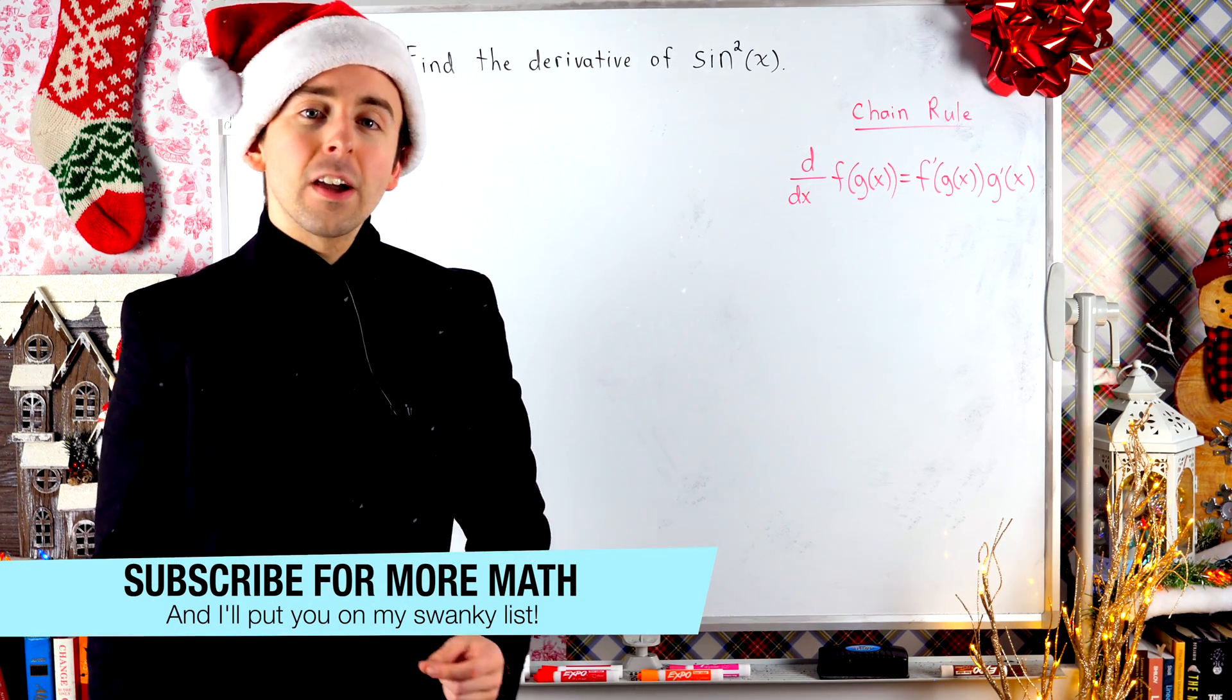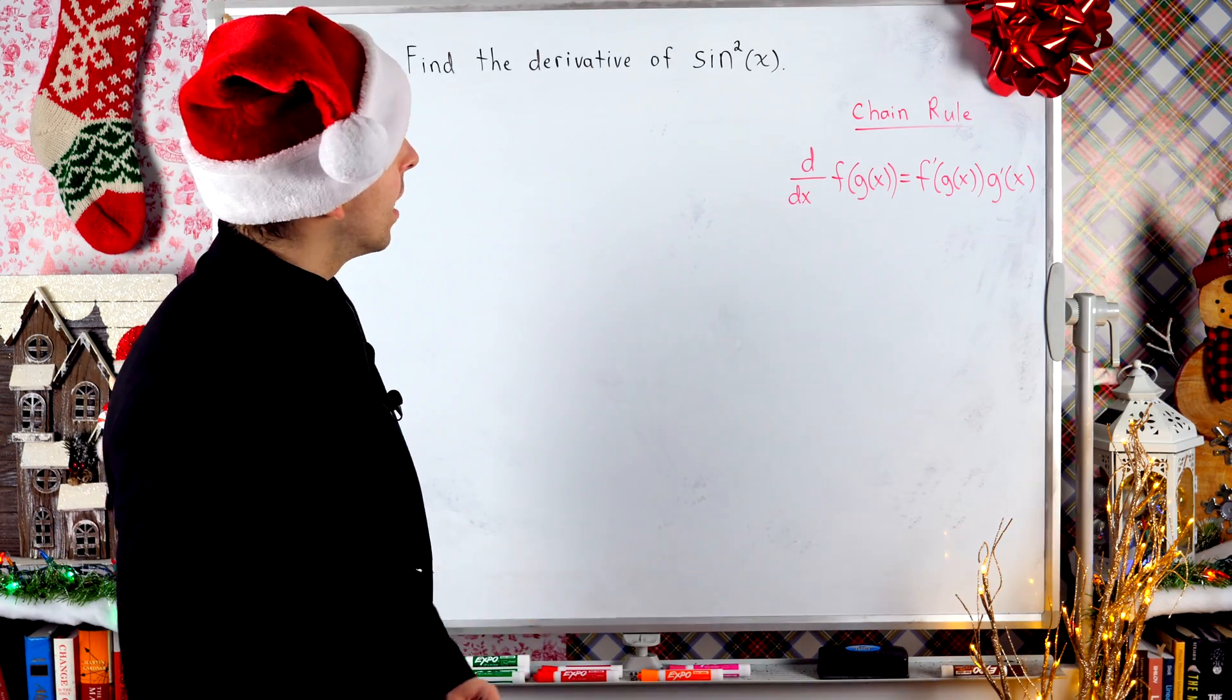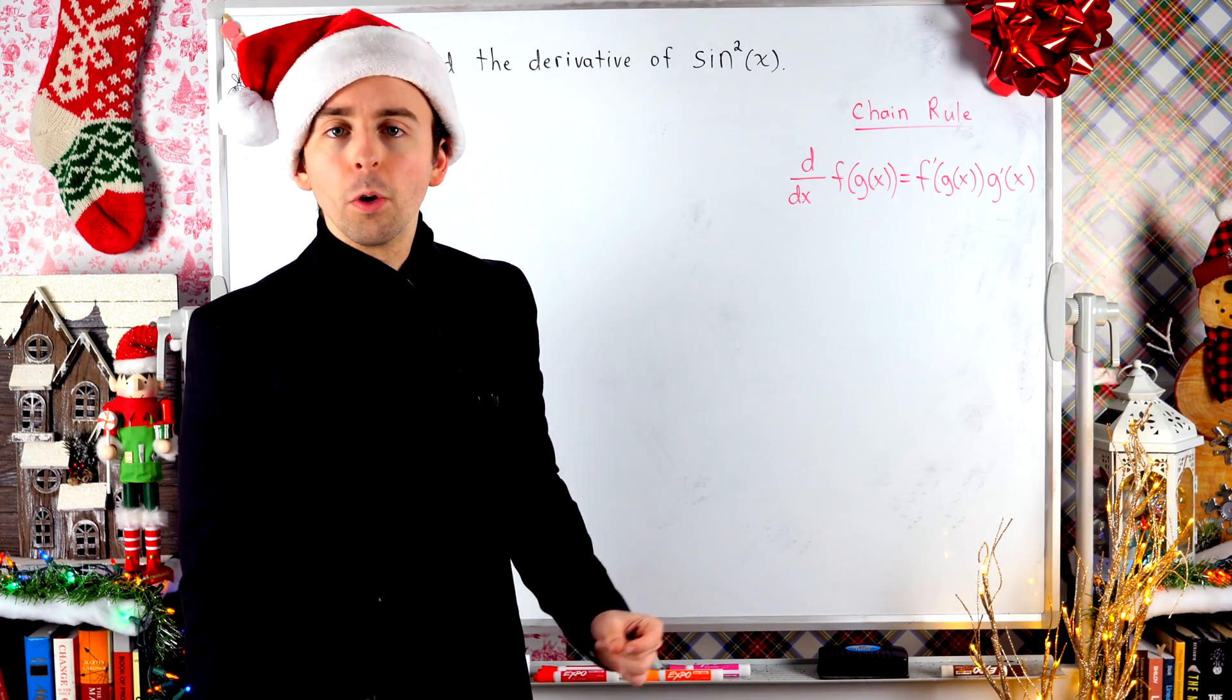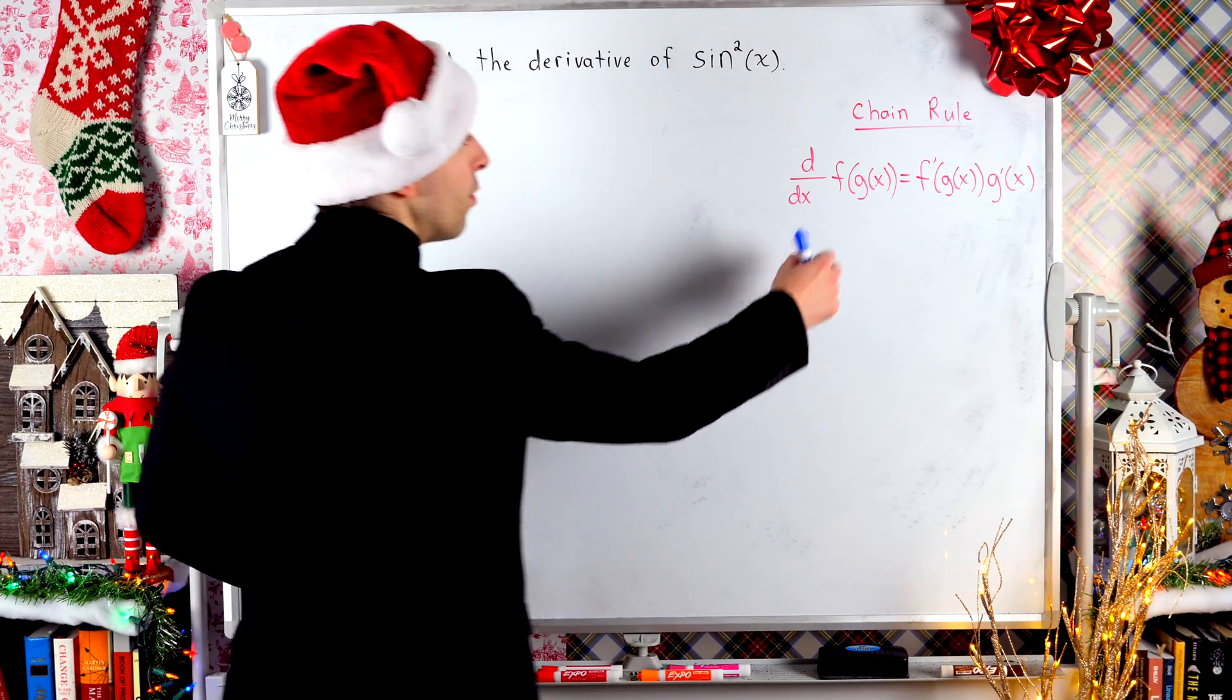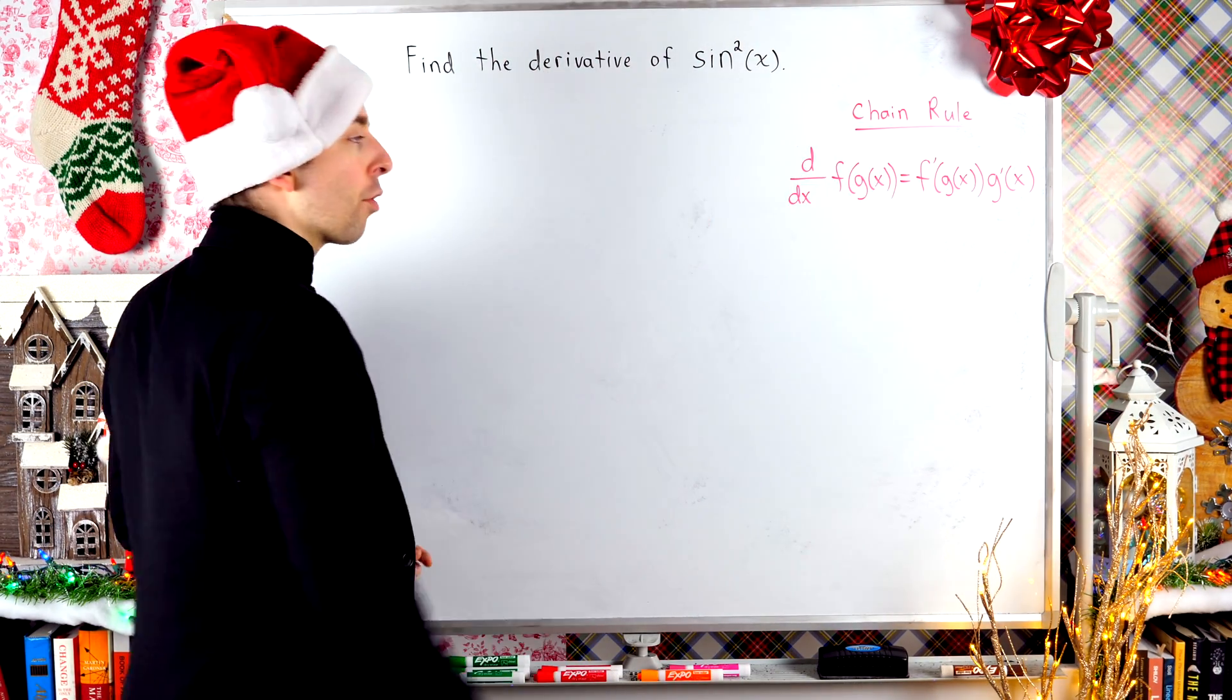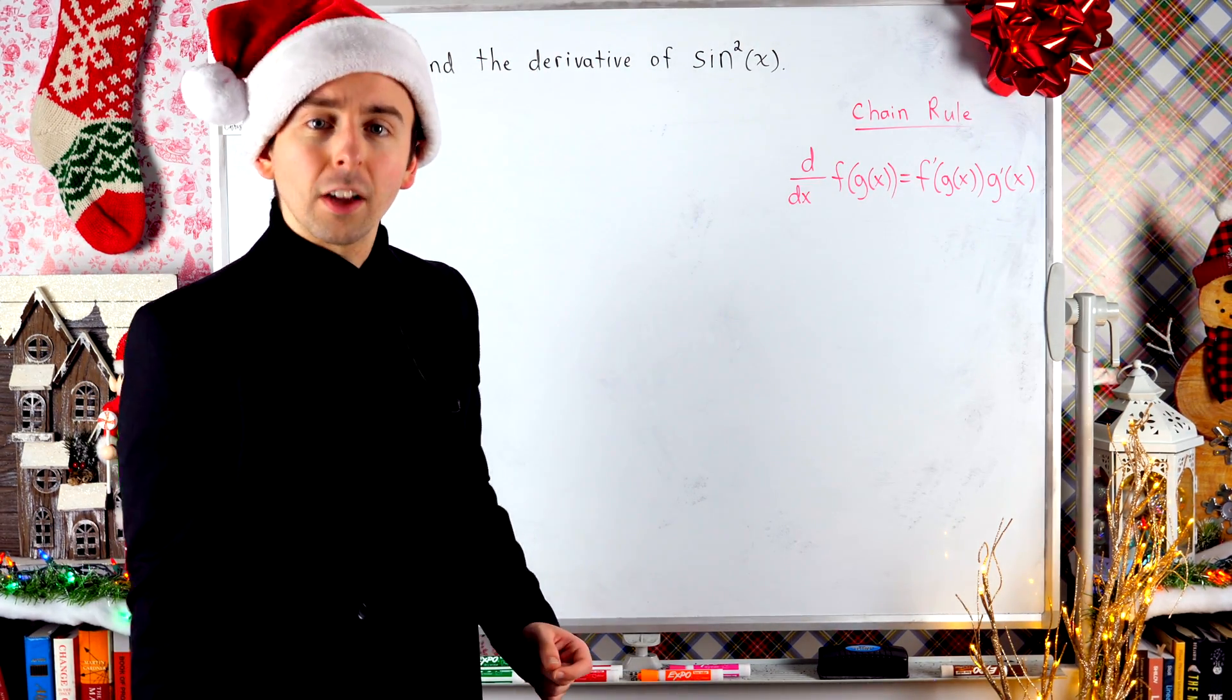If you're a little foggy on the chain rule, I'll explain it as we go and I've written it over here. To use the chain rule, we need to have a function inside of another function. It's called function composition.